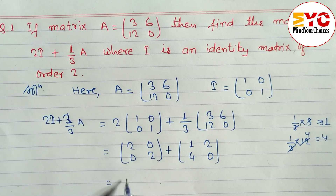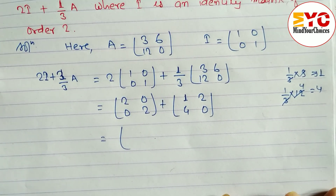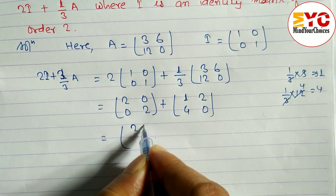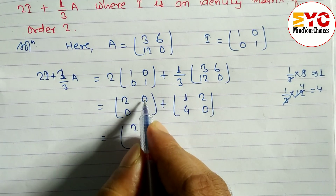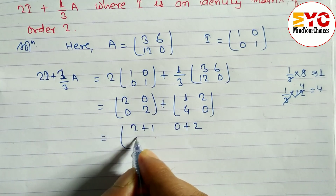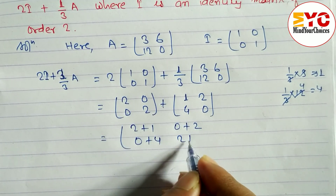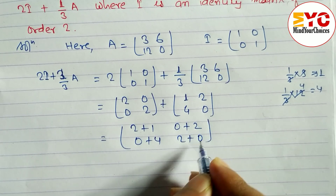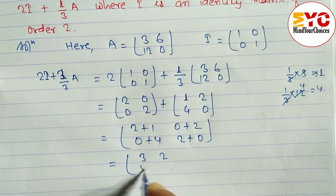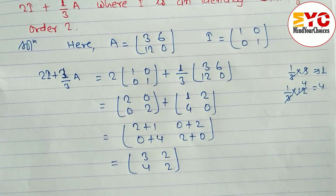Now we add the two matrices: (2+1), (0+2), (0+4), (2+0). After adding, we get the final answer [[3, 2], [4, 2]]. That completes question number one.